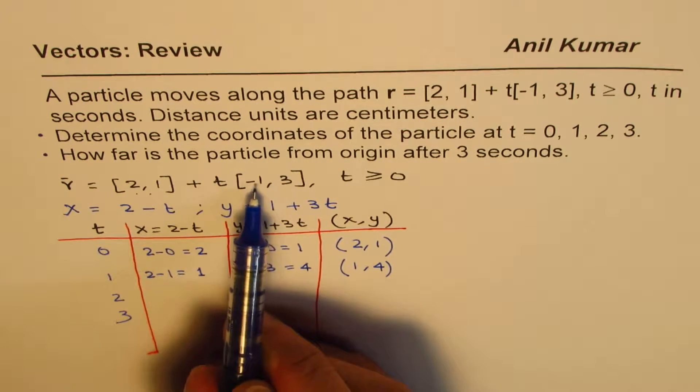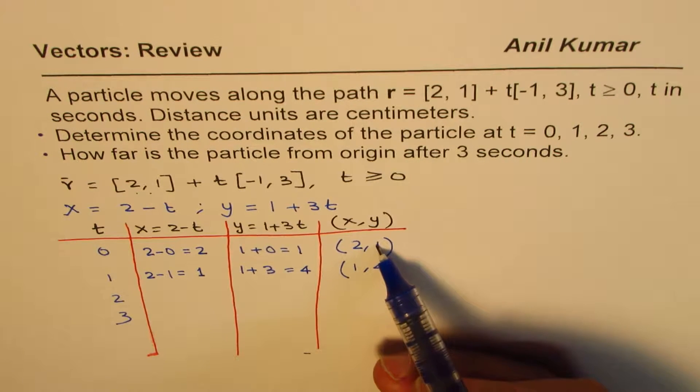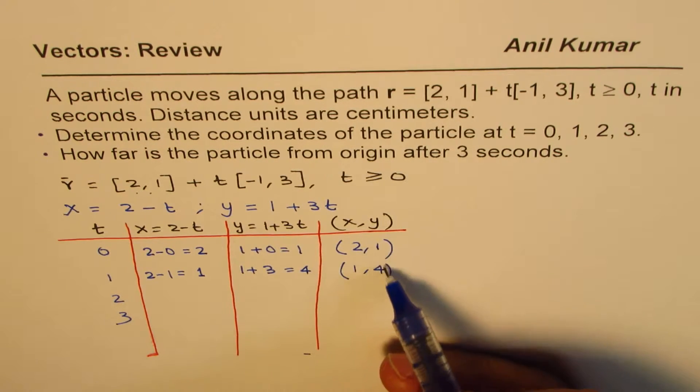As you can see, minus 1, 3. So this value decreases by 1 and that increases by 3. So that is how we get our values.